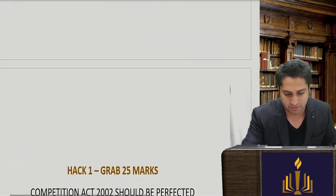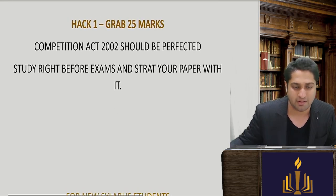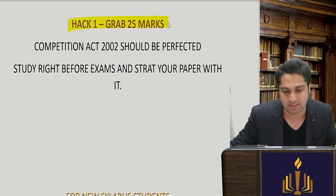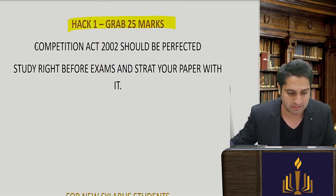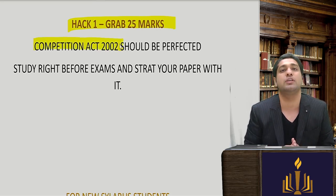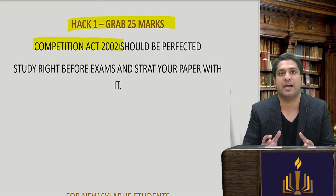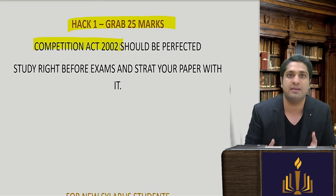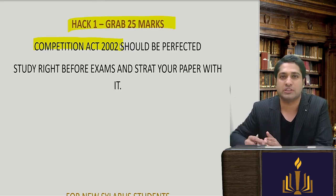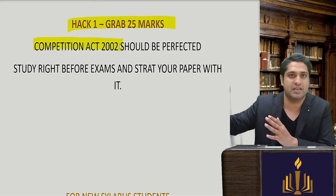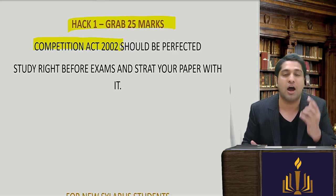For the ECIPL or Economic Law paper, it's very simple to crack and get good marks. The first thing is you can grab the first 25 marks. Your job is to get 20 out of 25. It is a sure-shot given that the Competition Act 2002 will come for 25 marks. If you can pull off 20 marks there, you will definitely clear the paper, because you will get the remaining 20 from the balance part of the paper.